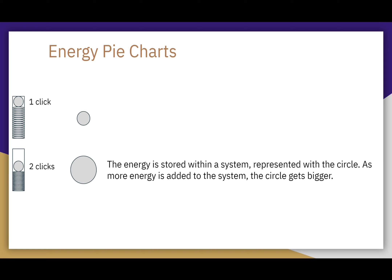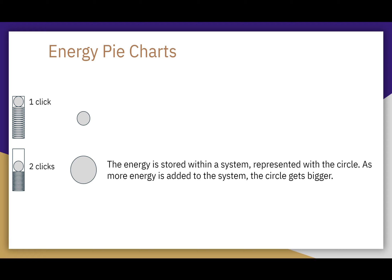If we push it down a little bit more, we are adding more energy. It required more effort to push down and compress the spring even further, so we needed to transfer more energy into the system, which means our pie chart is going to be bigger. As more energy is added to the system, the circle gets bigger. If we compress it all the way to that third click, we have transferred as much energy into the system as we can, so that's going to be the biggest circle.